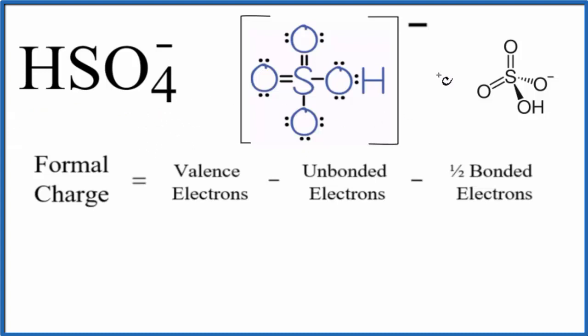We'll start by looking at a Lewis structure for HSO4 minus. If you need help, there's a link in the description on how to draw this Lewis structure. We'll use formal charges to determine whether this is the most likely or favorable Lewis structure.